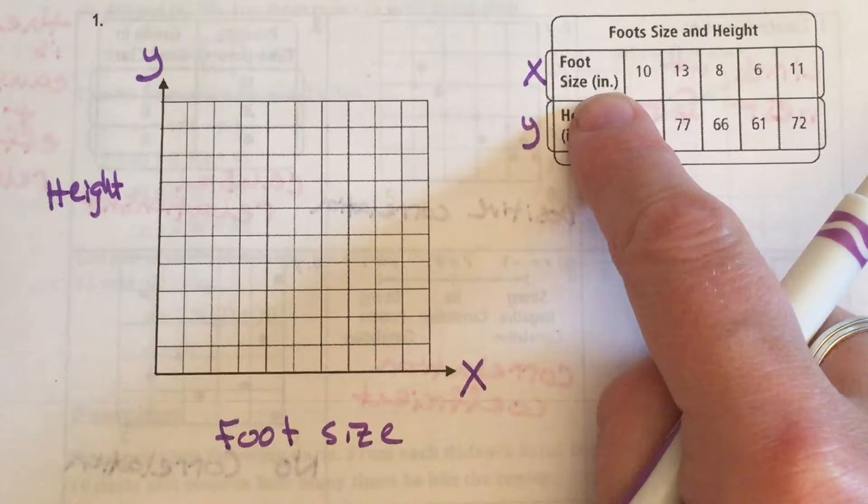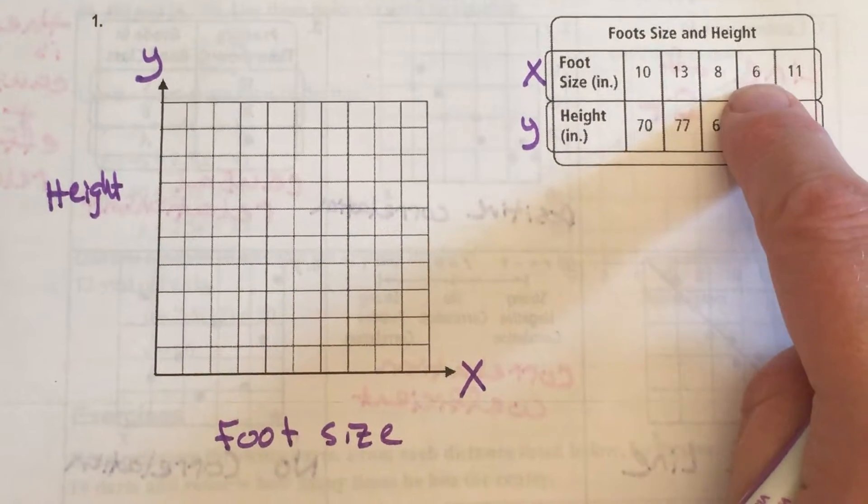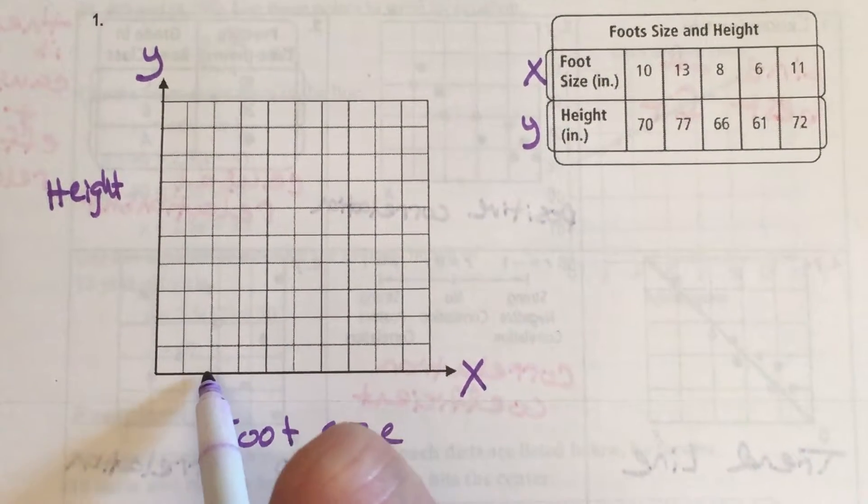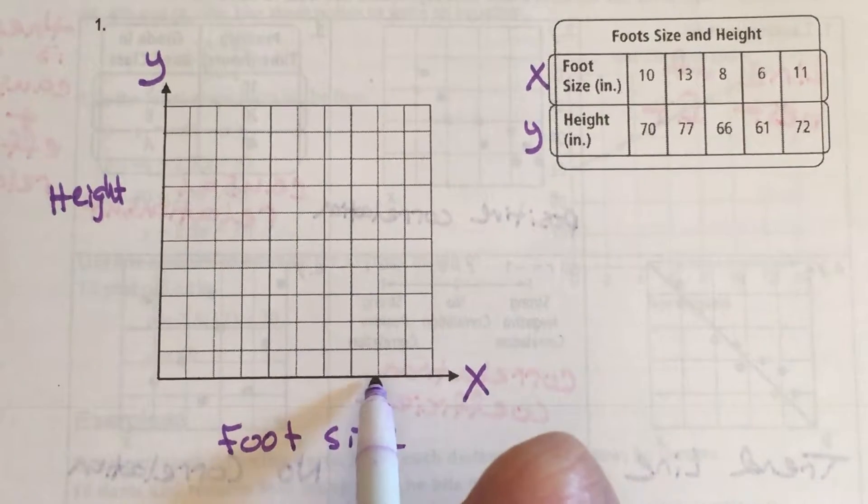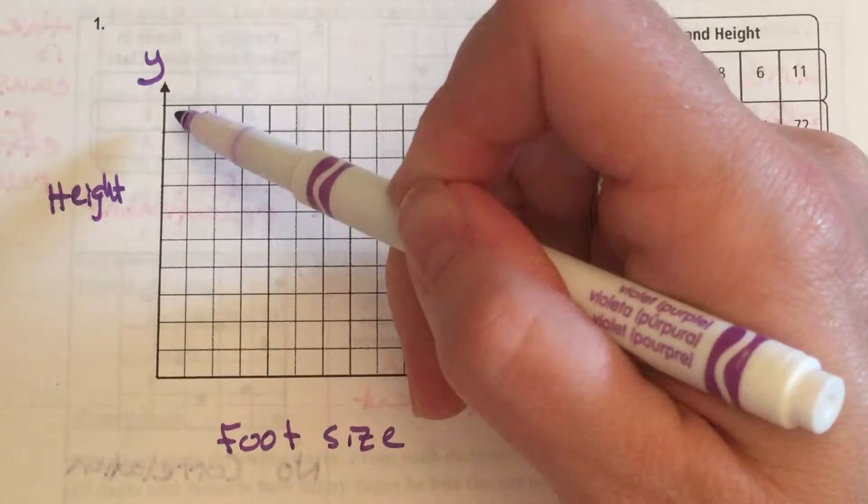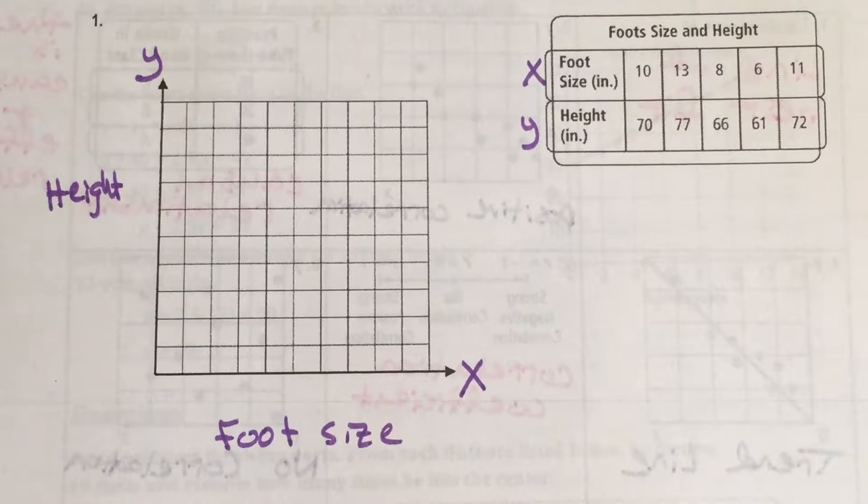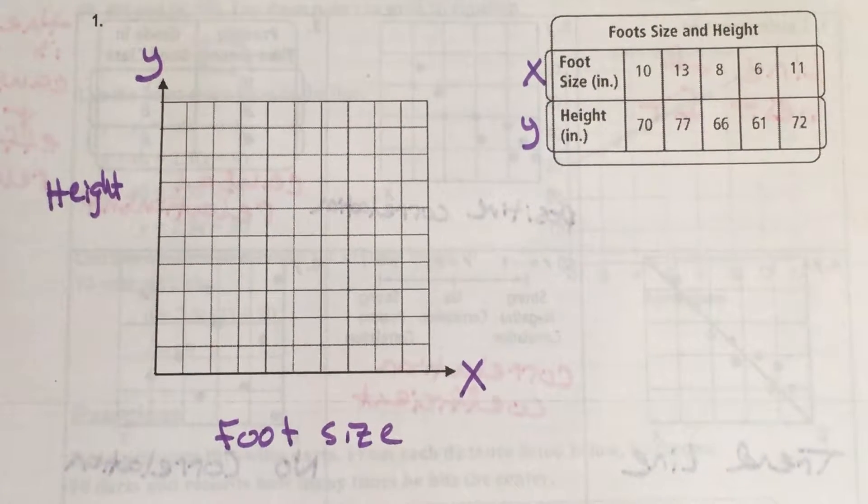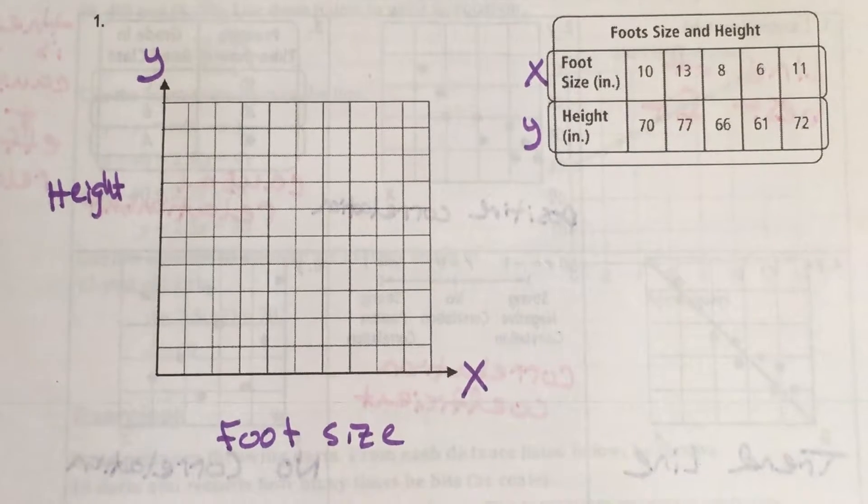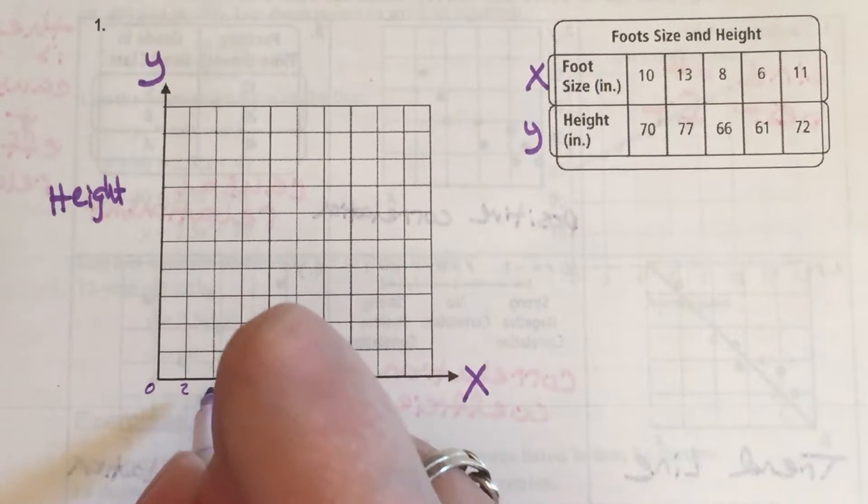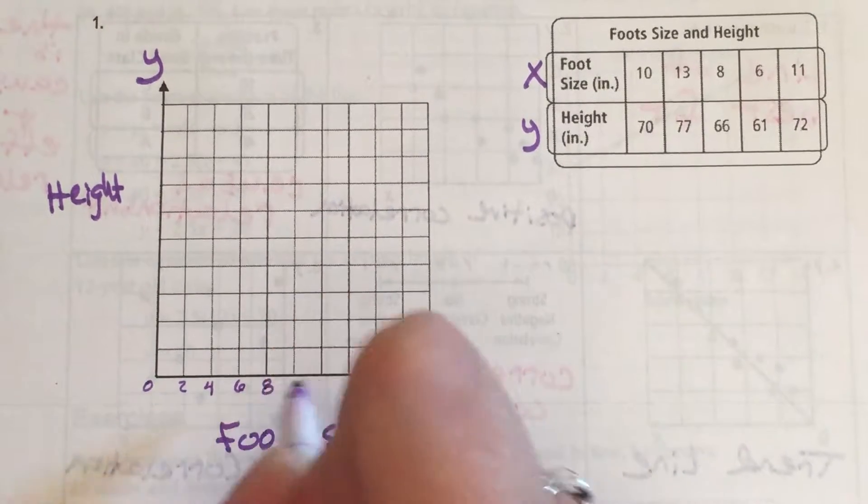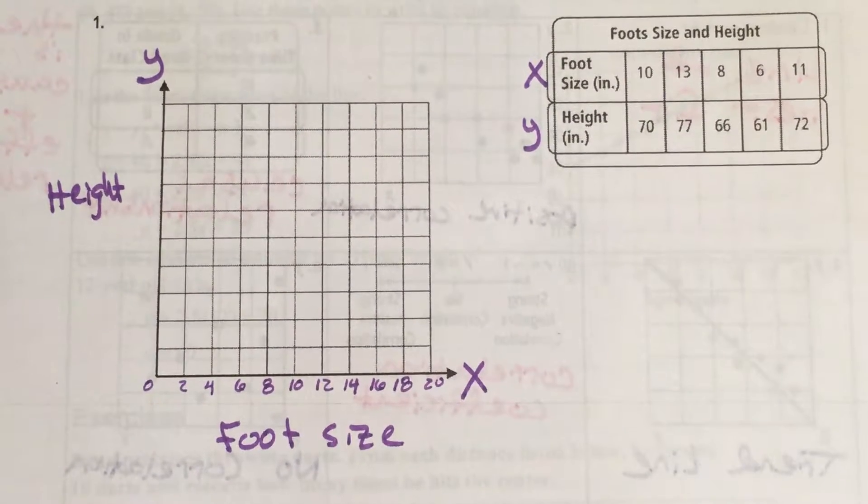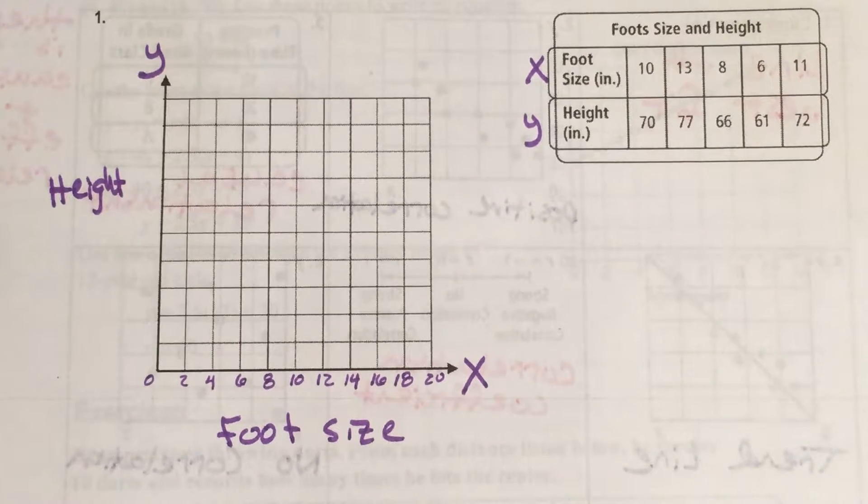So X axis, Y axis, we have foot size and we have height. Yes, you do need to label your axes otherwise how am I supposed to know what you're talking about? How are you supposed to know what you're talking about? So foot size in inches. What we have here is a range from 6 inches to 13 inches. And if we count off on your graph, we have 1, 2, 3, 4, 5, 6, 7, 8, 9, 10. This is a 10 by 10 square. So we need to use values that will make sense in our numbers. So if we counted by twos, that would work very nicely. So 0, 2, 4, 6, 8, 10, 12, 14, 16, 18, 20.